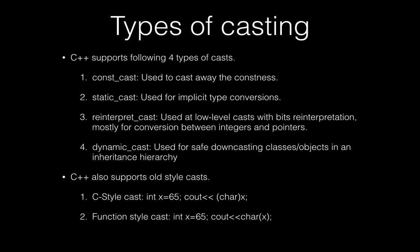We will be seeing each of the four cast types in detail in the following videos. The first is const_cast, which is used to cast away the constness. The second is static_cast, used for implicit type conversions. The third is reinterpret_cast, which is very rarely used and operates at a low level with bit interpretation.